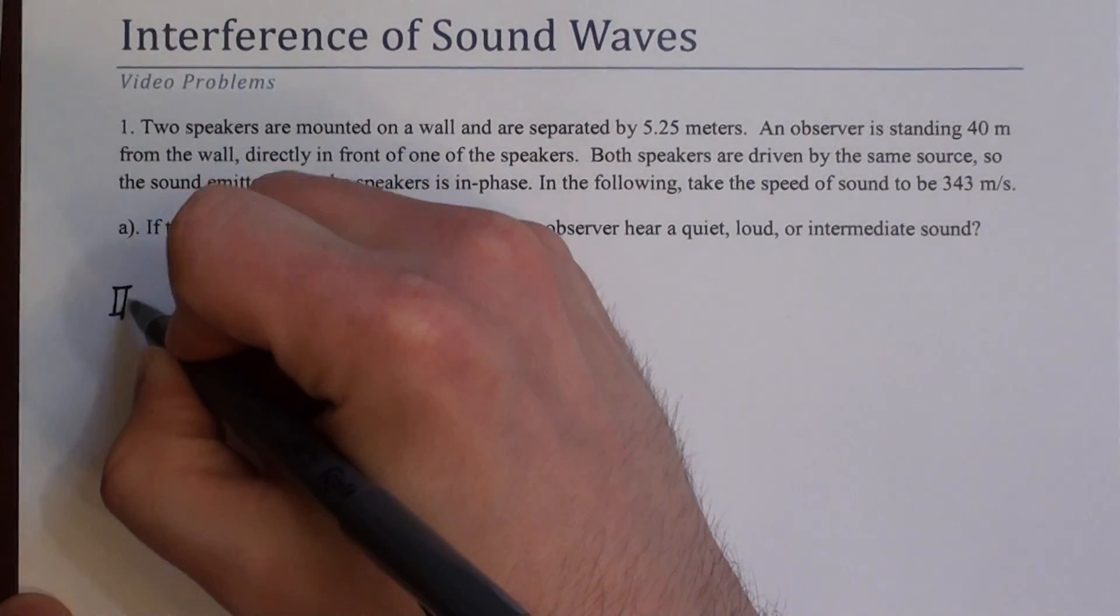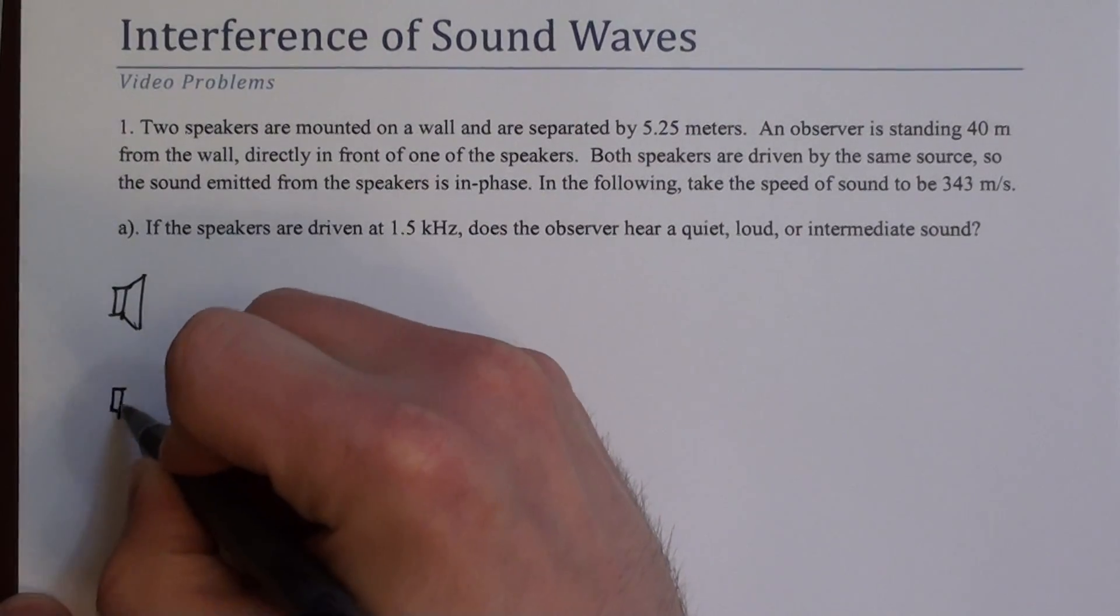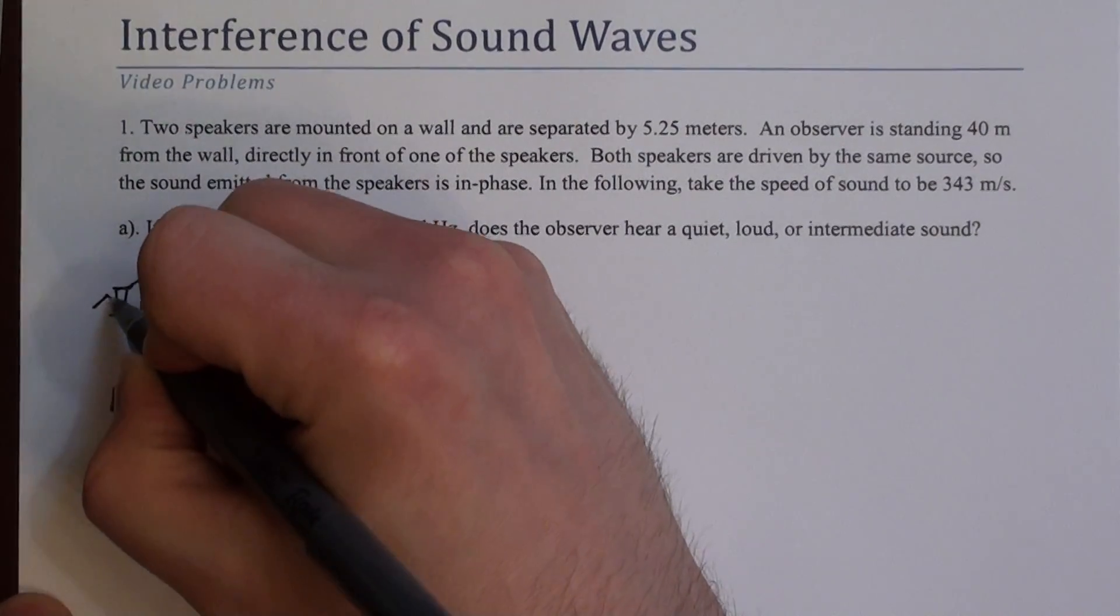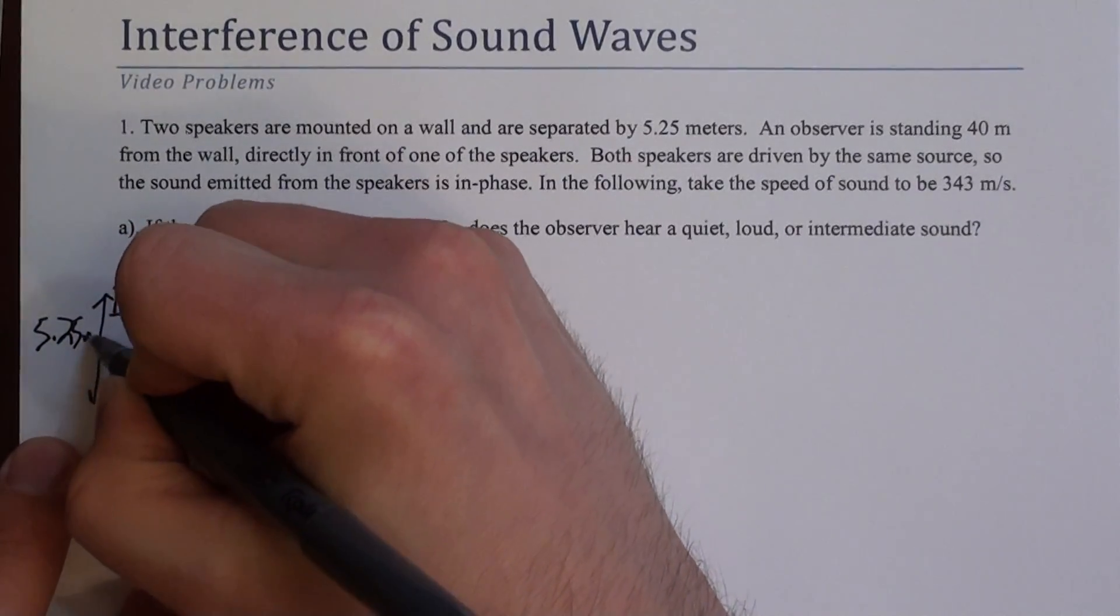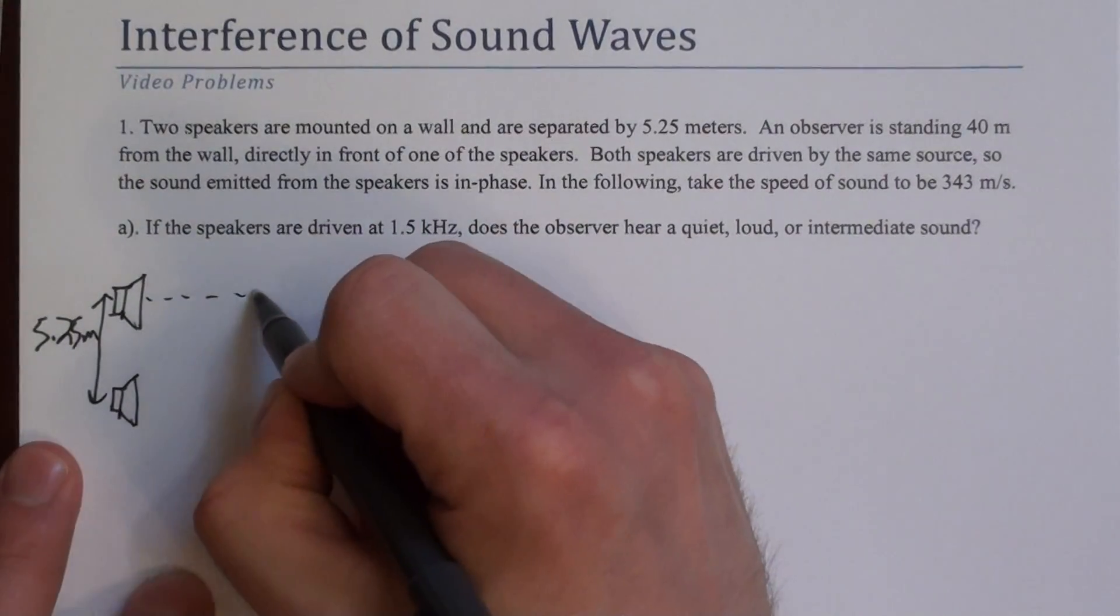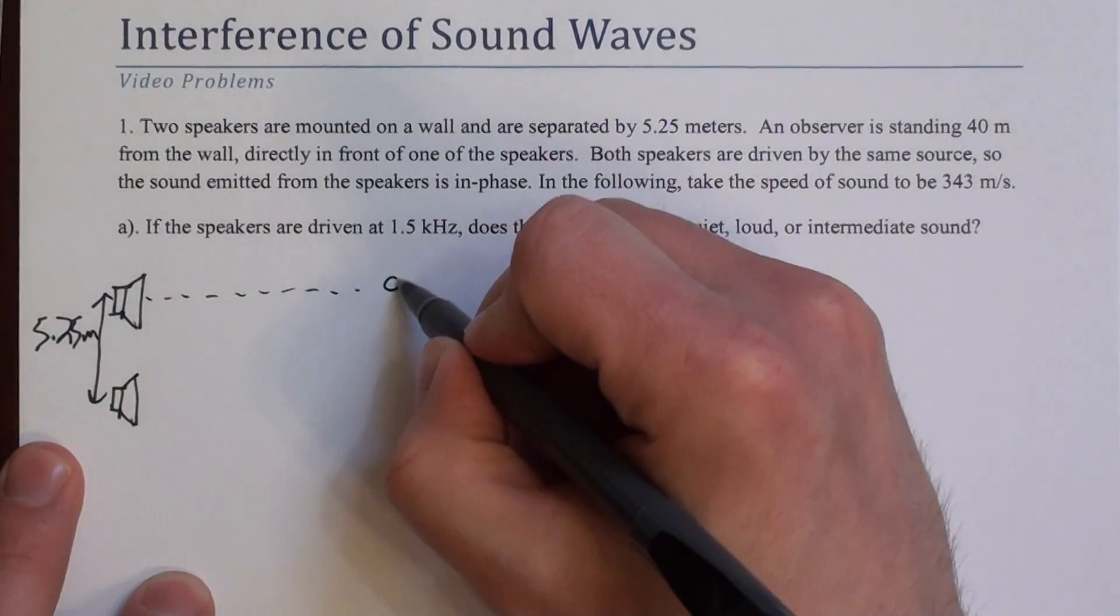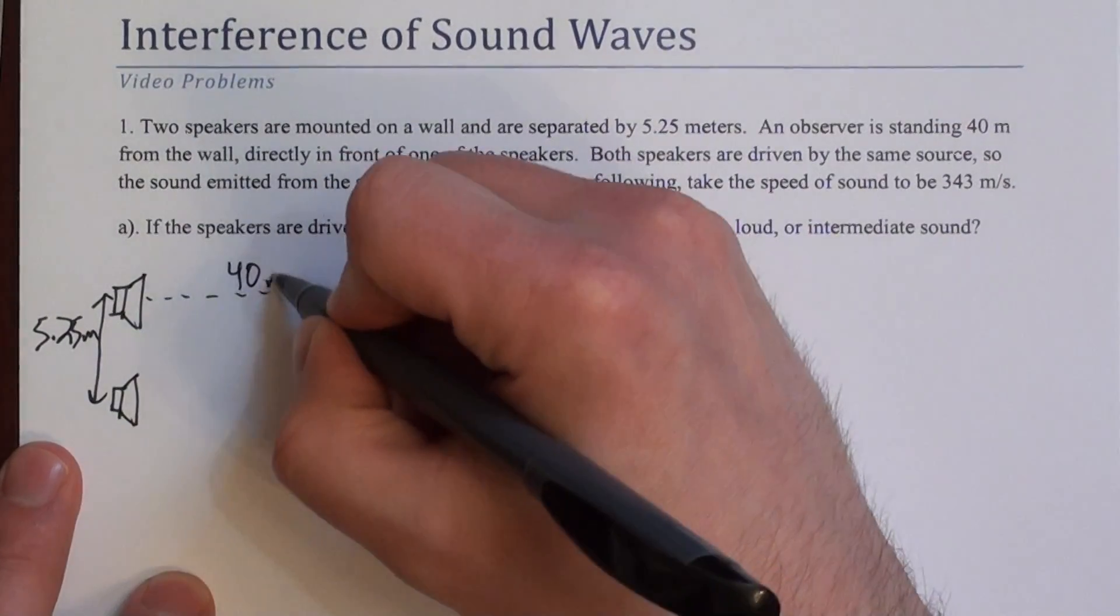Let's draw that. We have a speaker here and a second speaker here. They're separated by 5.25 meters. And there's an observer 40 meters from the wall and directly in front of one of the speakers. So it looks like this. Not quite to scale, but that's okay.